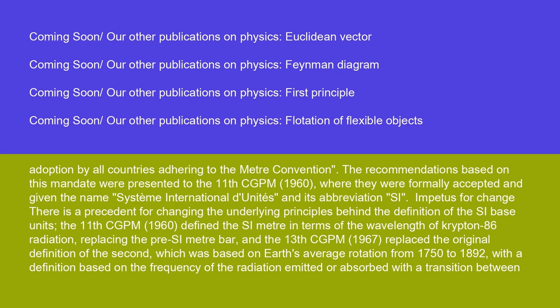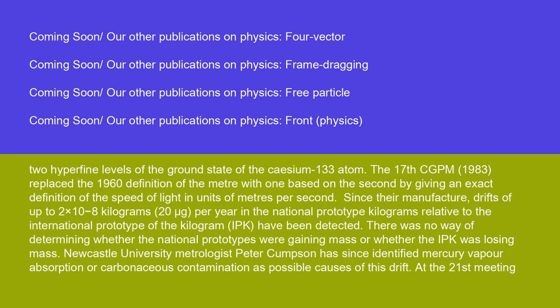There is a precedent for changing the underlying principles behind the definition of the SI base units. The 11th CGPM in 1960 defined the SI meter in terms of the wavelength of krypton-86 radiation, replacing the pre-SI meter bar. The 13th CGPM in 1967 replaced the original definition of the second, which was based on Earth's average rotation from 1750 to 1892, with a definition based on the frequency of radiation emitted or absorbed during a transition between two hyperfine levels of the ground state of the cesium-133 atom. The 17th CGPM in 1983 replaced the 1960 definition of the meter with one based on the second by giving an exact definition of the speed of light in units of meters per second.